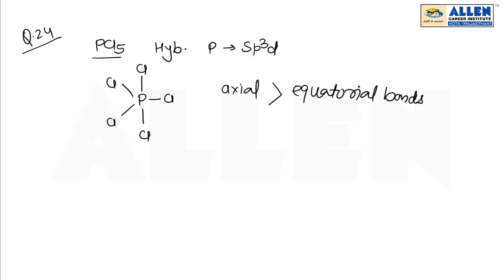All the equatorial bonds are present at 120 degrees. But PCl₅ is a reactive molecule, and that's why the answer is 4.